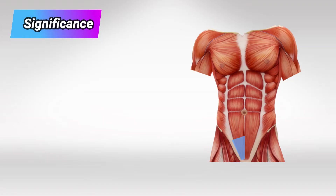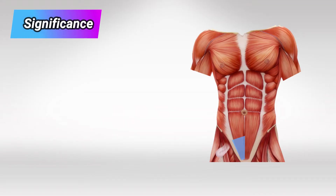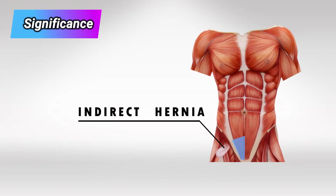If an abdominal organ or tissue herniates through the triangle we call this a direct hernia, and if it's outside the triangle we call it an indirect hernia.